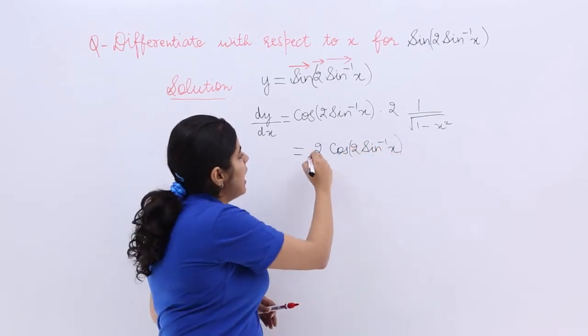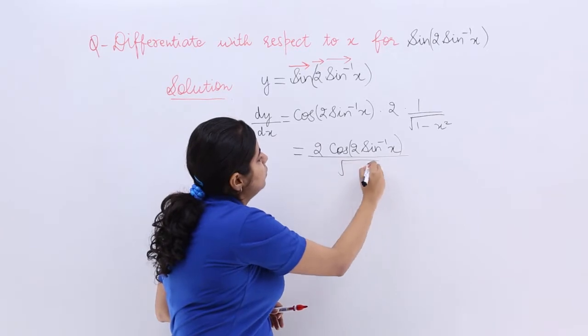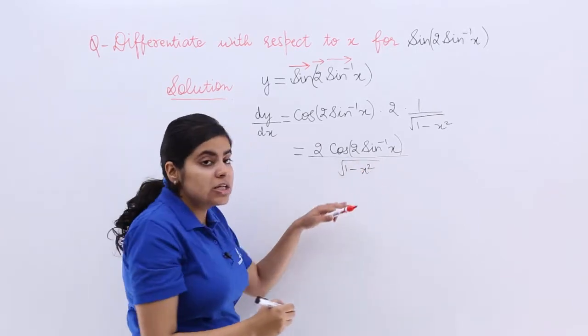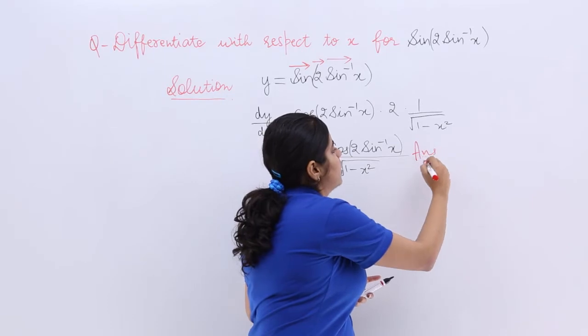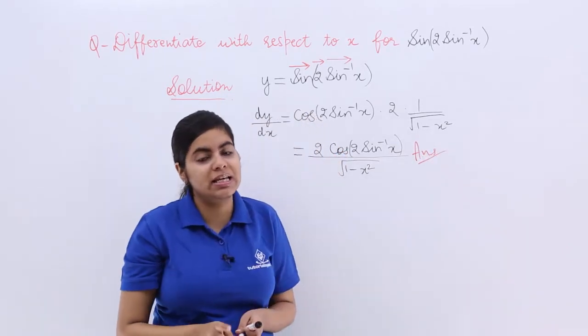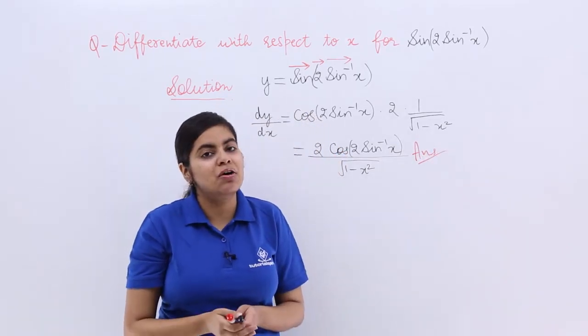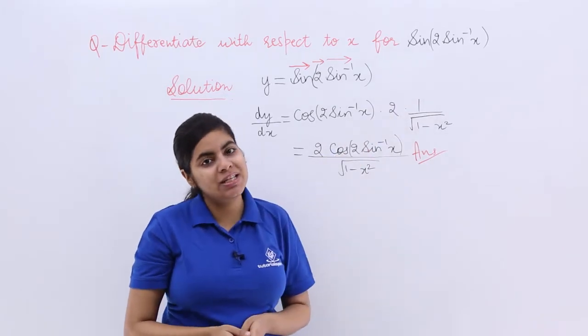Cos of 2 sin inverse x and you can put this in bracket if you wish to, and in the denominator we have under root 1 minus x square. So this is the answer. I write answer here for this question which says differentiate with respect to x for sin of 2 sin inverse x.